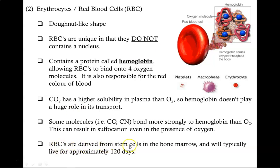Red blood cells come from stem cells located in the bone marrow, and they'll typically live for approximately 120 days, so about four months.